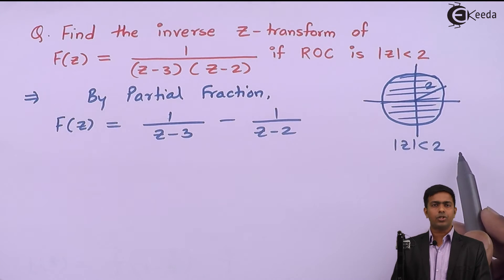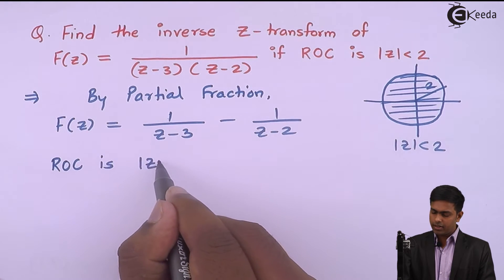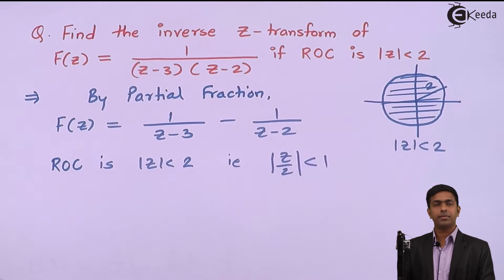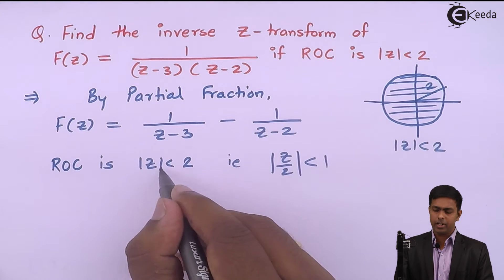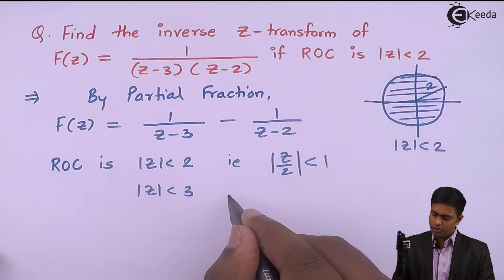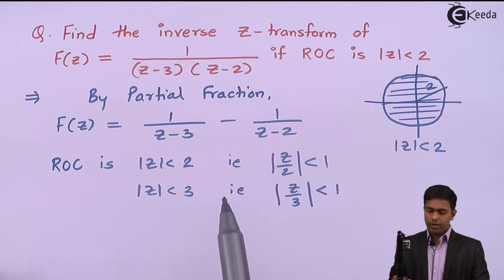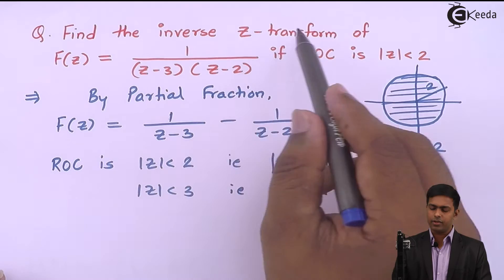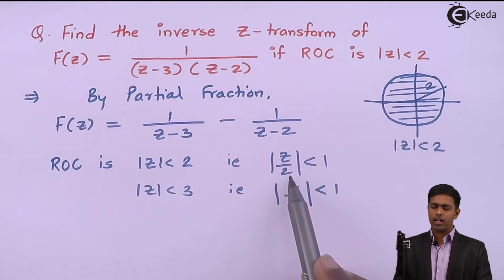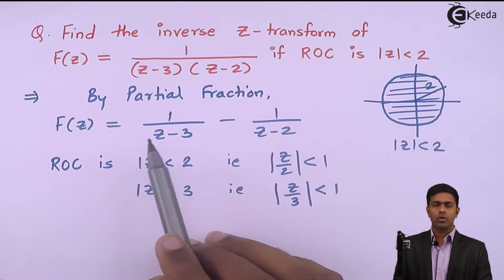Since |z| < 2 is the region of convergence, we note that |z/2| < 1. Since z must be less than 2, it is certainly less than 3, so we also have |z/3| < 1. To find the convergent series for this inverse z-transform, we will use these two conditions.